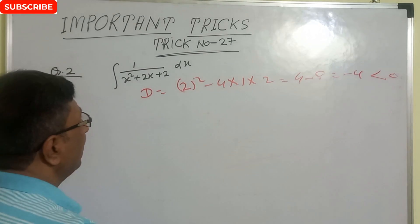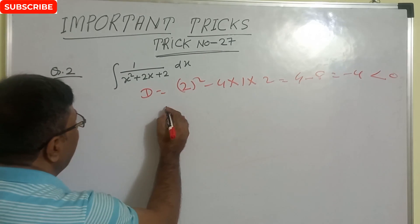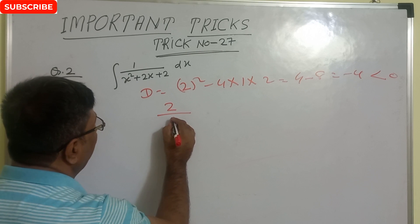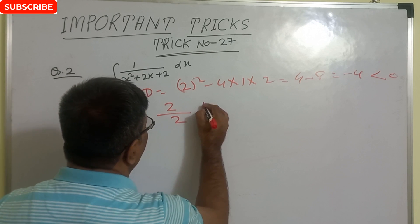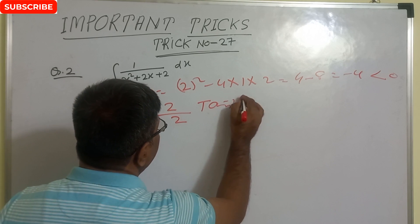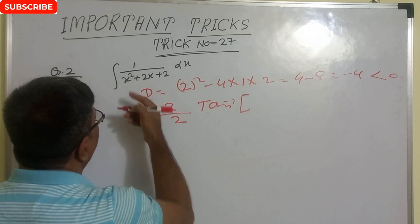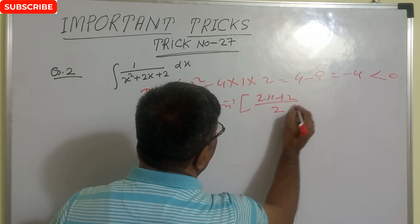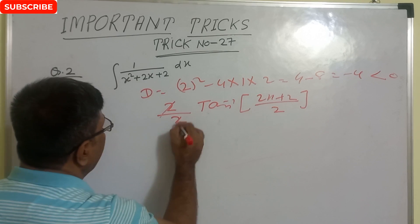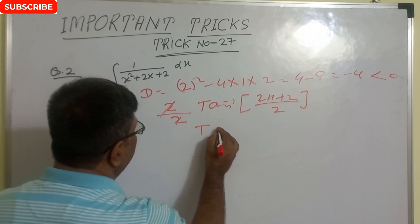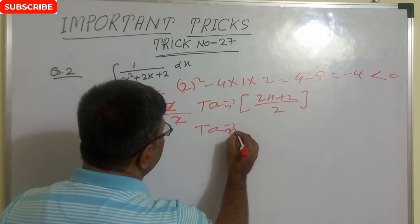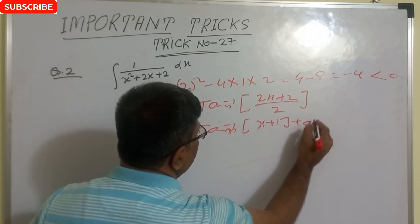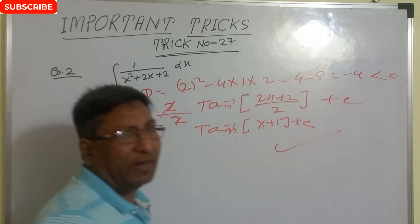Discriminant is less than 0, so the technique is: 2 upon square root of the positive sign of D — that is 4, so root 4 is 2. Then it is tan inverse of the derivative of the function (2x plus 2), divided by the root of the discriminant. So our answer is simply tan inverse (x plus 1) plus c. This is the correct answer.